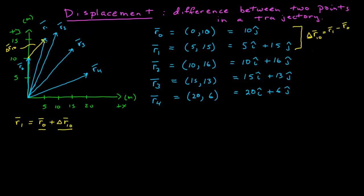Now, if I want to look at that mathematically, this is now delta r1, 0 is equal to r1 minus r0. And so, then I can do this subtraction in component form, and so I'll take r1, which is equal to 5i-hat plus 15j-hat. And I can take minus r0, which is 0i-hat minus 10j-hat, and add those together, and the difference delta r1, 0, then, is equal to 5i-hat plus 5j-hat.